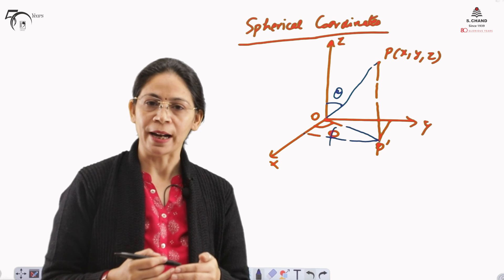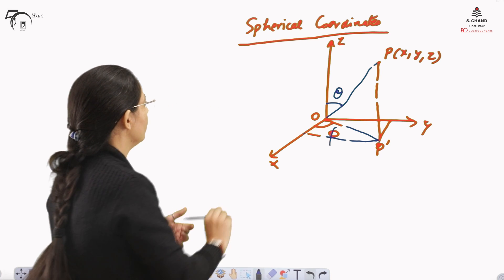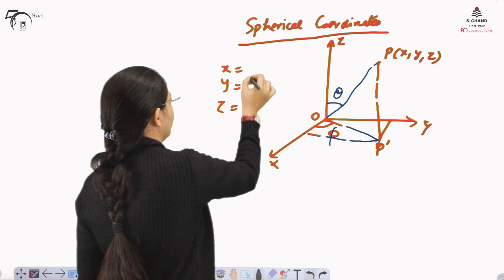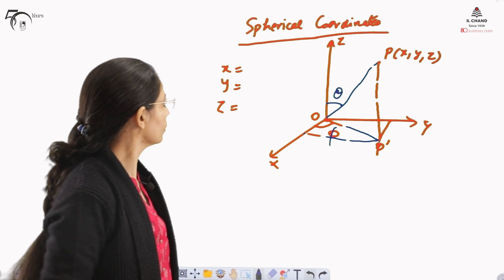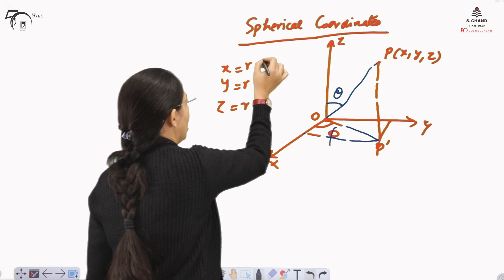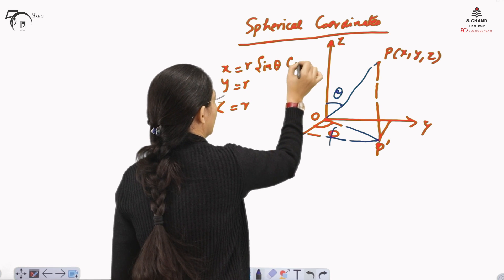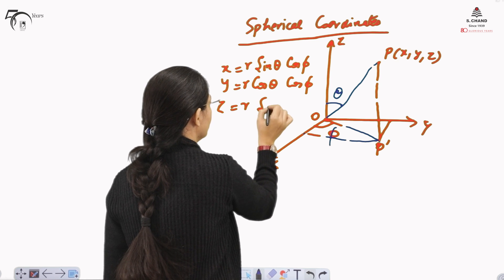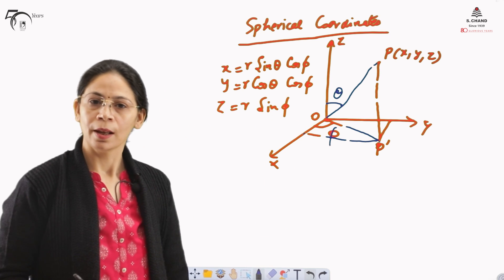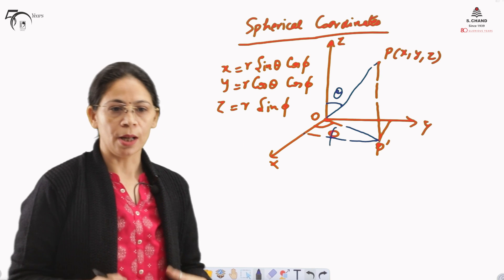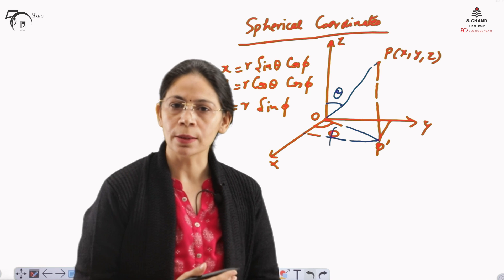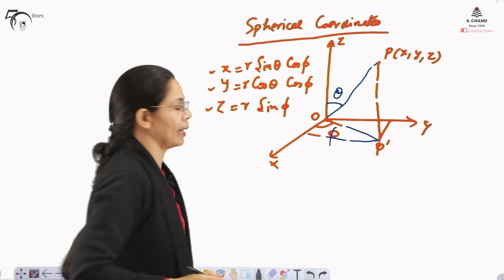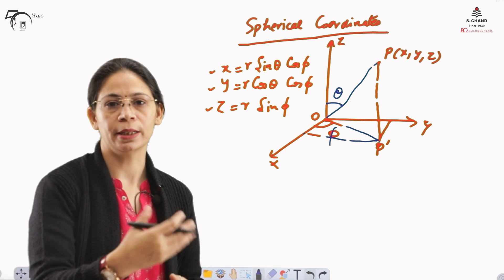We define theta and phi accordingly and write the expressions for x, y, and z. If the distance from the origin to point P is R, then x equals R sinθ cosφ, y equals R cosθ cosφ, and z equals R sinφ. That is how spherical coordinates are written, with three variables R, theta, and phi.